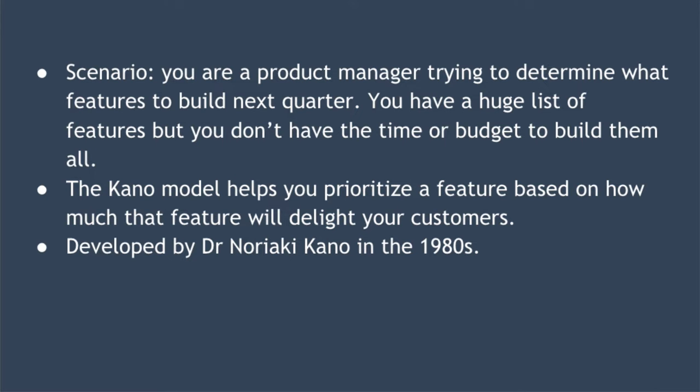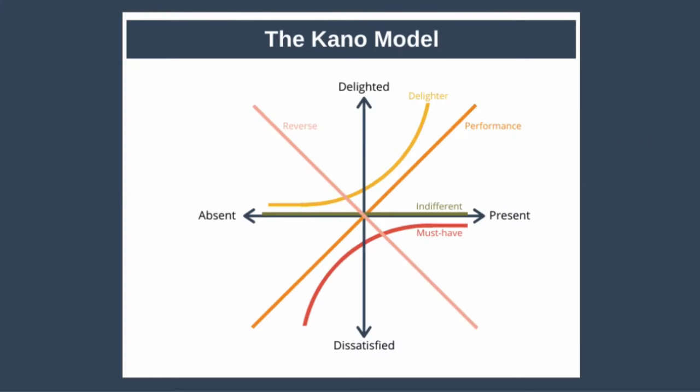The model was developed by Dr. Noriaki Kano, a professor of quality management from Tokyo University in the 1980s. The Kano model works by understanding each feature you want to develop based on two axes. On the x-axis we have whether the feature is absent or present within your product or service, and on the y-axis we have how you expect the customer to respond to the feature — whether they are dissatisfied or delighted. The model then breaks this diagram into categories of features, represented by the lines you can see on the diagram.